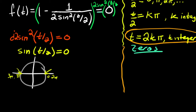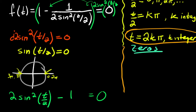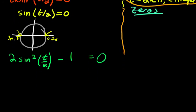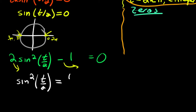Multiplying both sides by 2 sine squared of t over 2 — on the right side we get zero, and on the left side when we distribute, we get 2 sine squared of t over 2 minus 1 equals zero, because the fraction cancels leaving just 1. Moving the 1 over and then dividing by 2, we get sine squared of t over 2 equals positive 1/2.